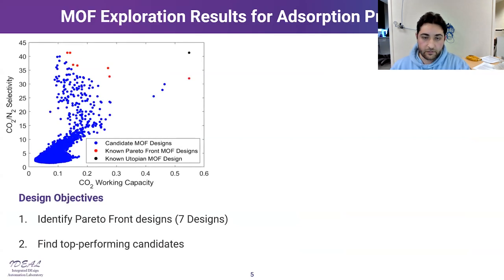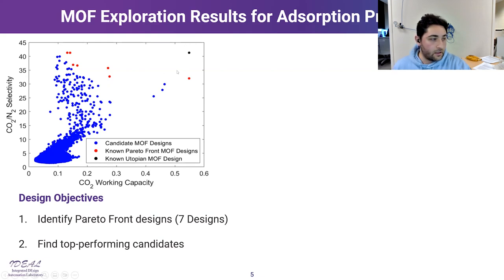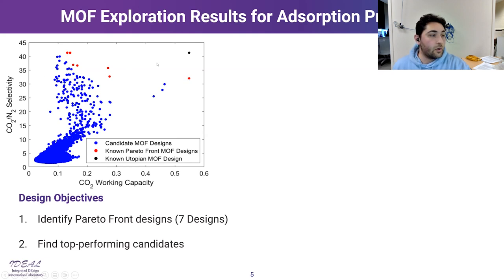For this research, we calculated properties for all 48,000 candidates. We are interested in identifying the Pareto front designs, shown in red dots, as well as the top performing candidates. We define top performing as those closest in Euclidean space to a hypothetical utopian MOF — one that has the best CO2 working capacity and best CO2 selectivity simultaneously.